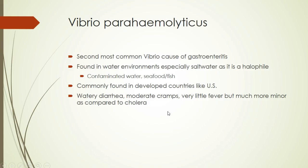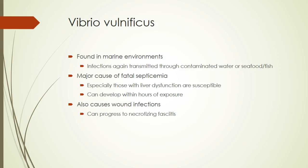Vibrio parahemolyticus also causes gastroenteritis. It is found in salt water because it wants that salt. It can be seen in the U.S., and though not as severe as cholera, it does cause diarrhea. Vibrio vulnificus is also from water environments and is a huge cause of fatal septicemia — it can develop very quickly into full-blown septicemia and be deadly to the patient within hours. It can also cause necrotizing fasciitis if it gets into wounds.